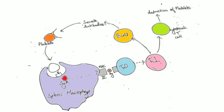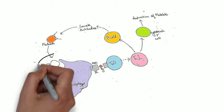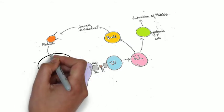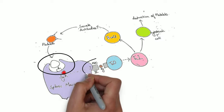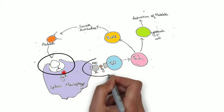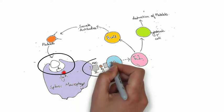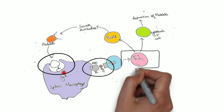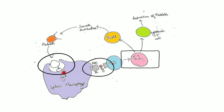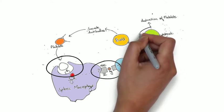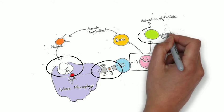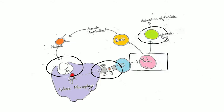Now let's talk about the pathophysiology. Initially, the splenic macrophages sample the platelet antigens and present it via MHC type 2 to TH0 cells. TH0 cells then predominantly differentiate to TH1 cells, which stimulate the cytotoxic T cells to directly destroy the platelet.